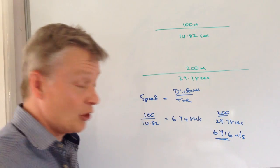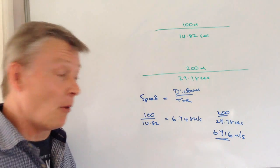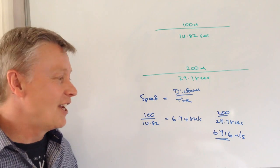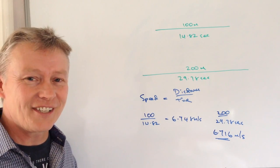So actually race two over 200 metres, a bit more than I could do, but 200 metres at 6.716 metres per second is the fastest race.